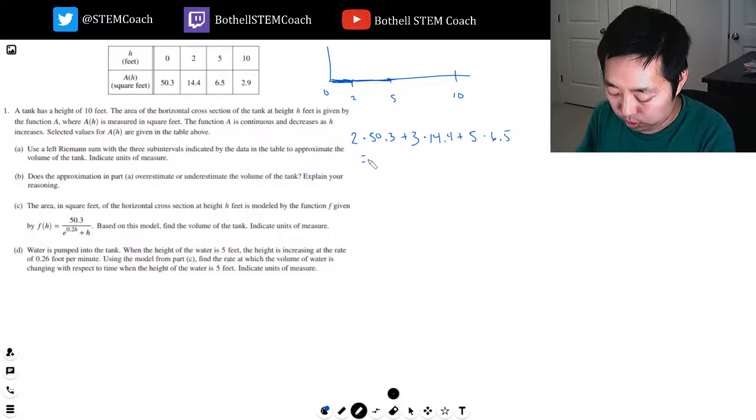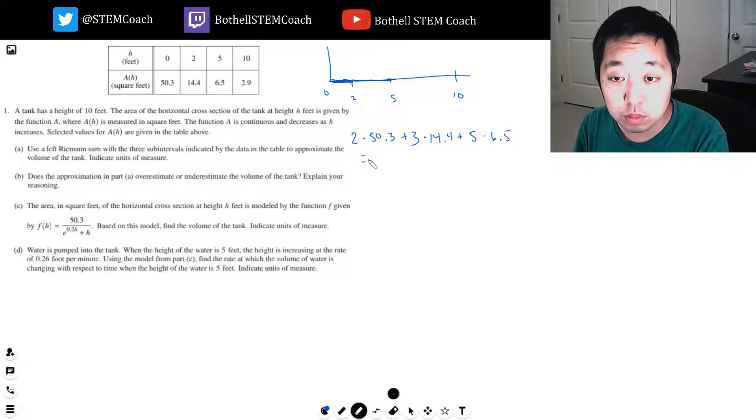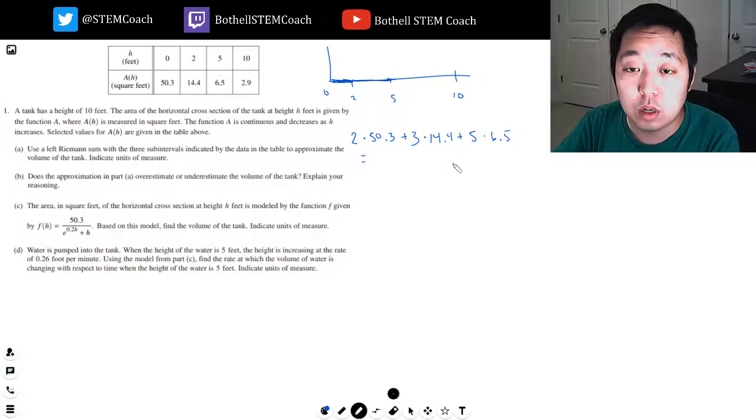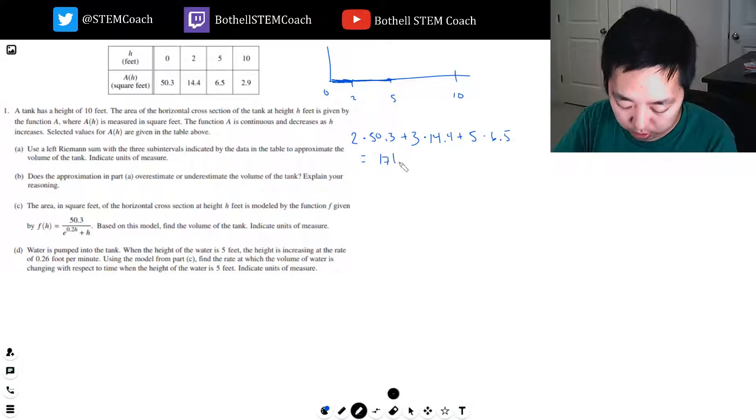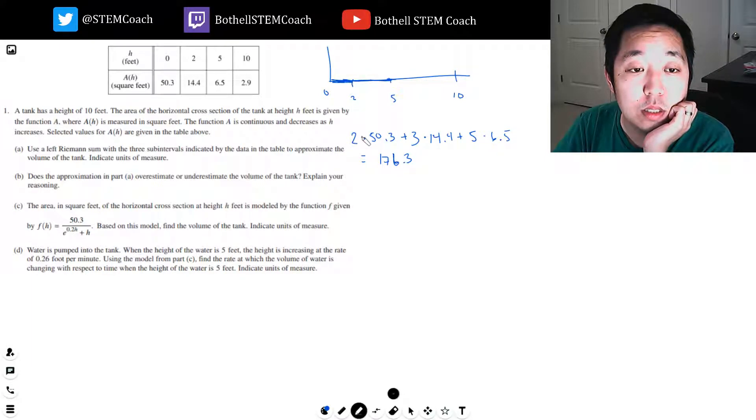And I will just use a normal calculator. I still don't have a graphing calculator to show you guys. 50.3 times 2 plus 3 times 14.4, plus 5 times 6.5, 176.3. Don't forget the units here. Each of these was square feet times feet, so that's cubic feet. And that's correct, because that's what we were looking for, volume.